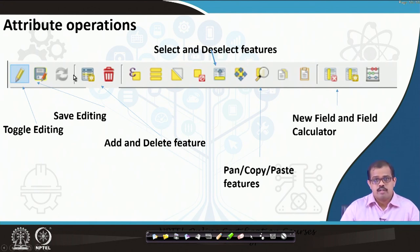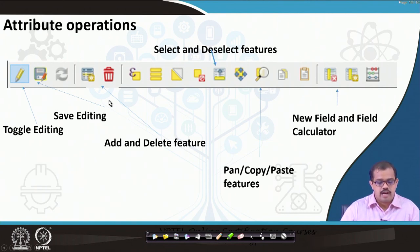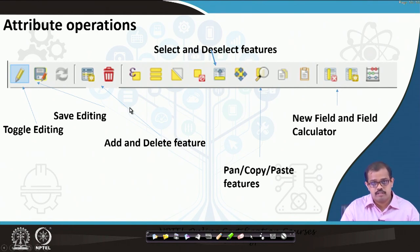Then there is save editing — once you have edited, if you want to save you can toggle it to save whatever editing has been done. There is add or delete features within the attribute context. There is select and deselect features, pan for panning the entire database, and copy and paste features within the attribute table.